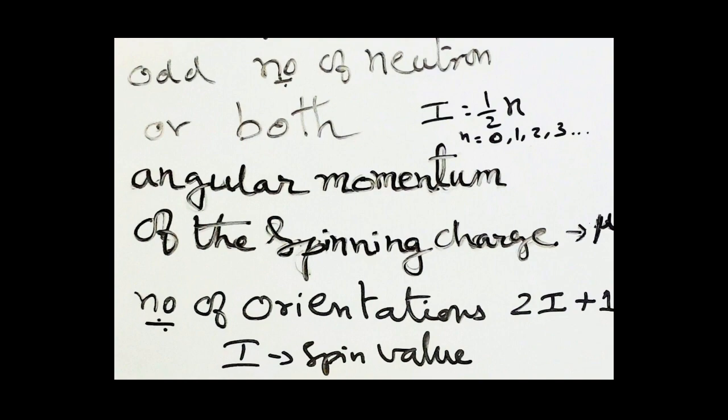One orientation aligns with the applied magnetic field (parallel) and the other opposes it (anti-parallel). For deuterium, I = 1, so the number of orientations is 2(1) + 1 = 3. A deuterium nucleus will show three orientations because its spin value I equals 1. These three orientations will be represented pictorially later when we discuss the NMR spectrum of deuterium.